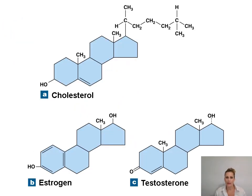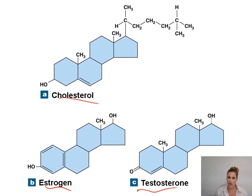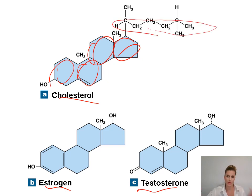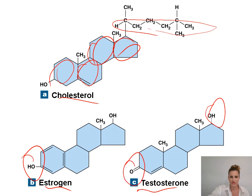Here you can see some examples of steroids — cholesterol, estrogen, testosterone. Looking at these, you can very easily see that they're steroids because of the four rings: one, two, three, four. They all have that in common. Everything else on there can be different — there's a really big group on one, whereas another has just a small functional group. Over here there's an OH, a hydroxyl, and here there's a double bond O. That's what makes them different, but they all have the same four-ring structure in common.